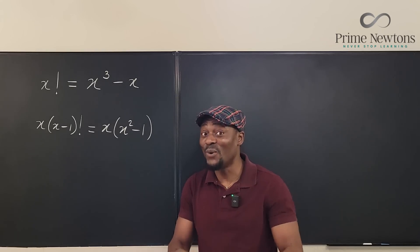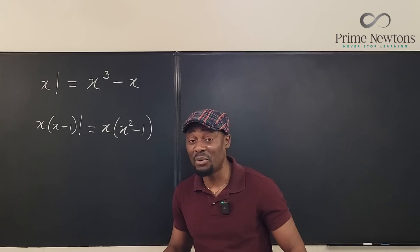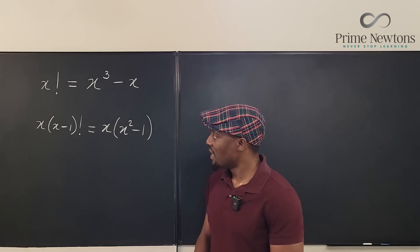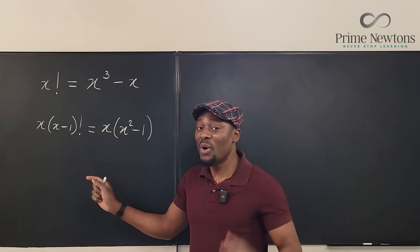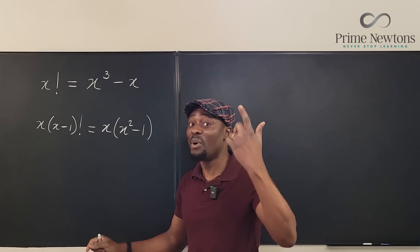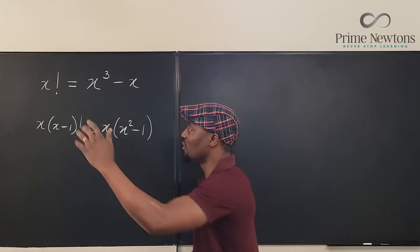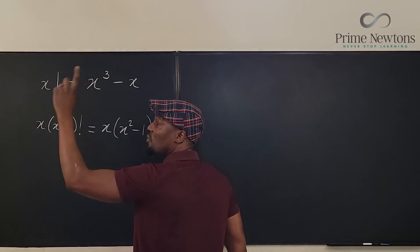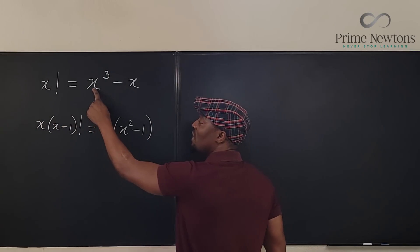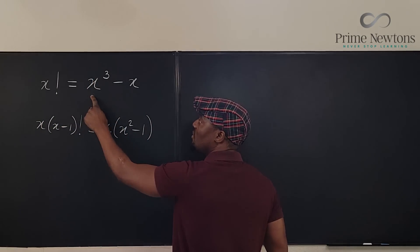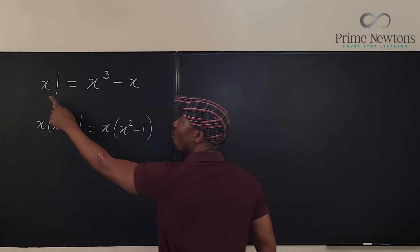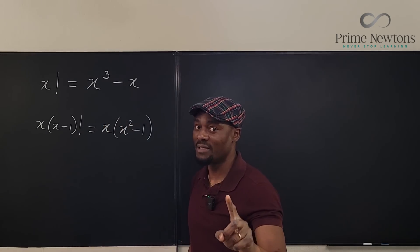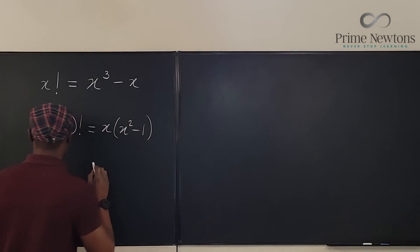Remember, you can only divide both sides by any variable if you're sure the variable is not zero. So can I divide both sides by x? Well, I have to quickly check. Is it possible for x to be zero? Well, go back and just do a mental check. What is zero factorial? Zero factorial is one. What is zero cubed? Zero cubed is zero. Zero minus zero is zero. One equals zero is not a true statement. So x is not zero. So I can divide both sides.